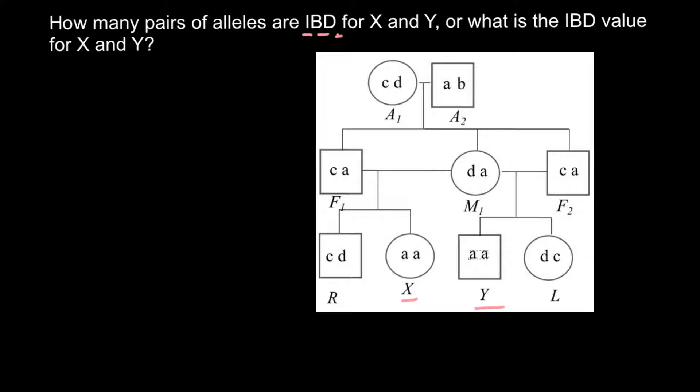We see that two alleles here are the same as two alleles here. Identical by descent can be of three values.